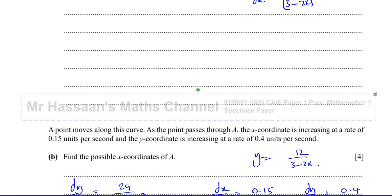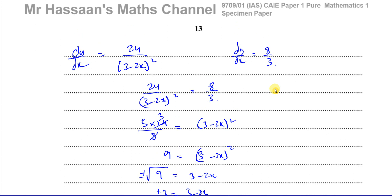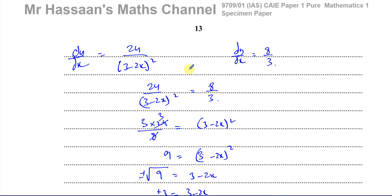That completes question number 8 from the specimen paper of the 9709 Pure Mathematics P1 Cambridge A-level exam. Other questions from this paper and from the topic of differentiation — specifically the chain rule for P1 Cambridge — can be found in the playlists. You can subscribe to the channel by clicking the link. Thank you for watching, see you soon.